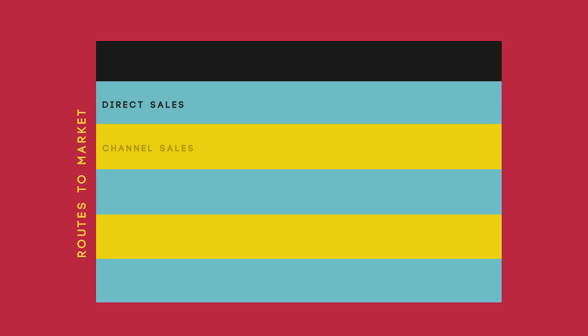I have routes to market on this side — let's call it direct sales, channel, inside, and OEM over here. Freemium might be another, and then free viral adoption. So these are my routes to market.